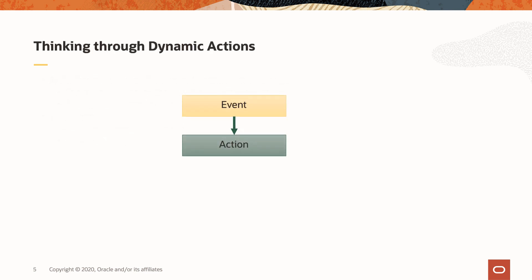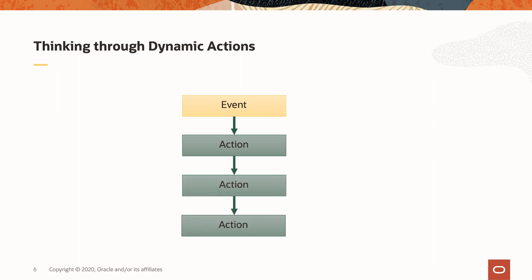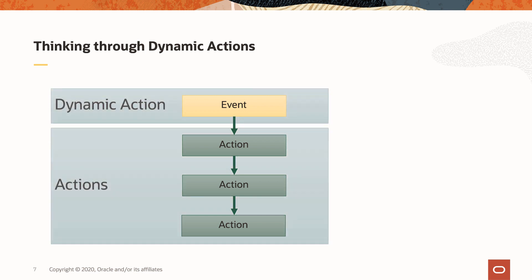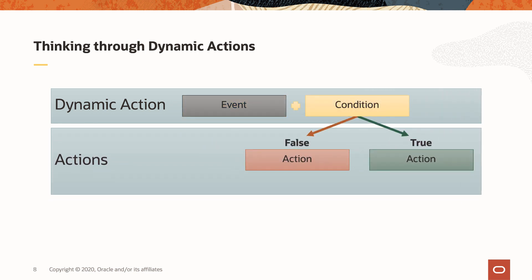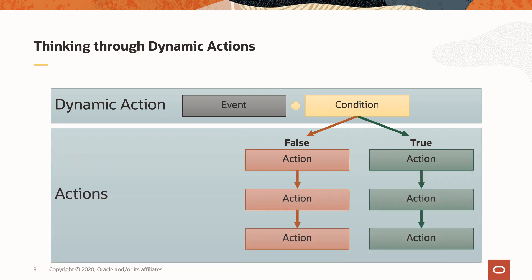Here's how I like to think through dynamic actions. You have the event, and that leads to some kind of an action. Sometimes one action won't be enough, so you have the ability to add as many actions as are needed. The top part is the parent, the dynamic action, and the actions are the children. Within the dynamic action, you can specify an optional client-side condition that will resolve to true or false, allowing you to specify actions that only fire accordingly. Sometimes one action isn't enough, so you can specify as many actions as are needed in either path.